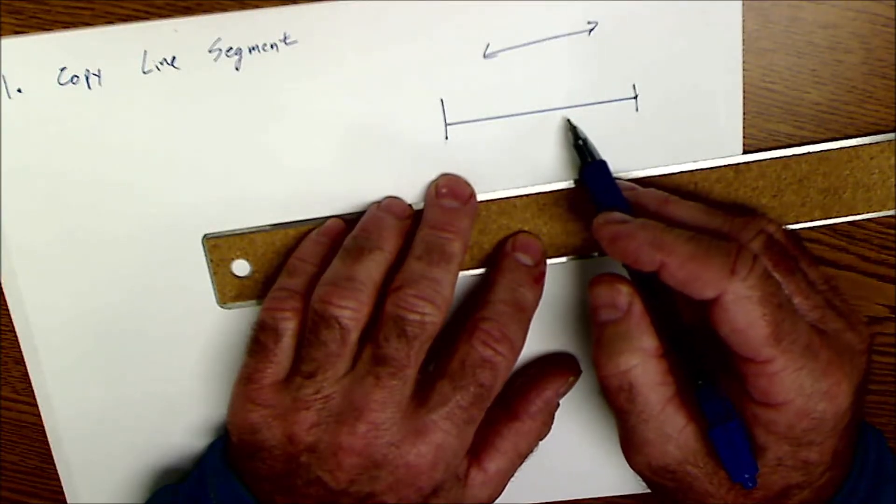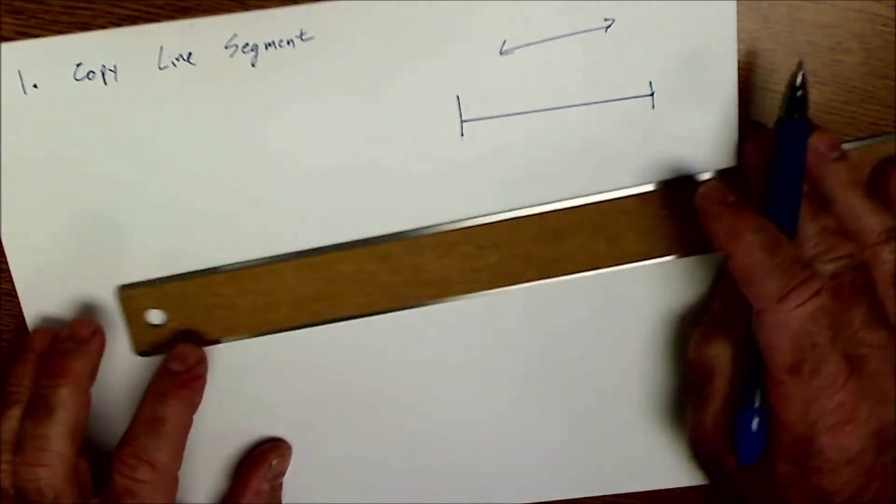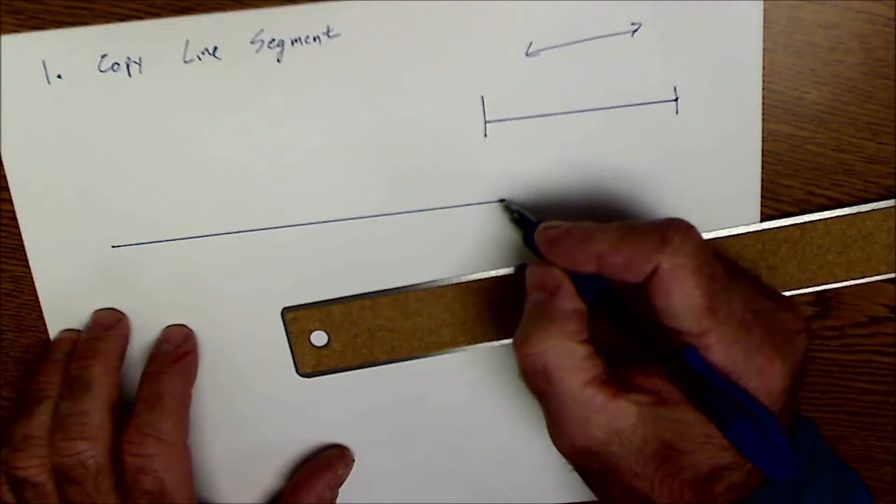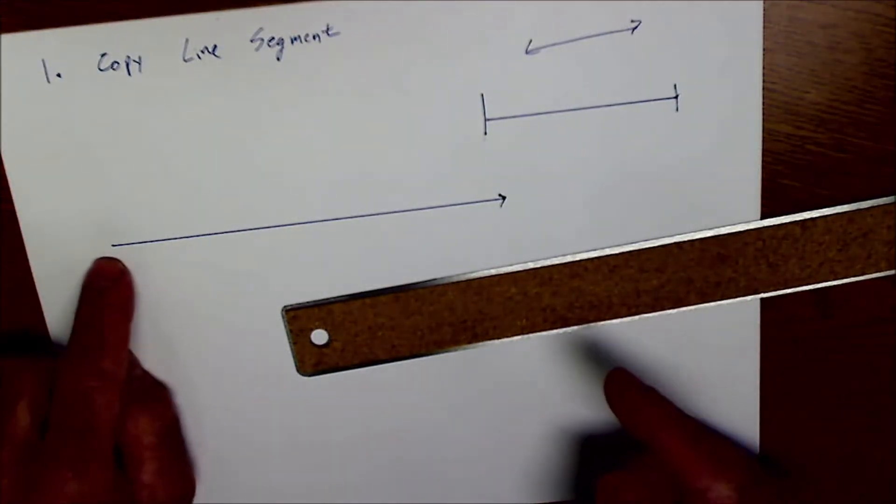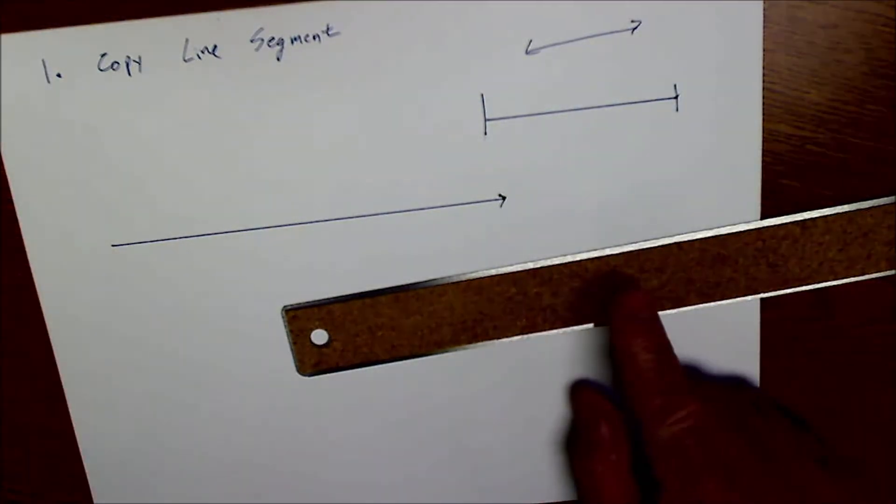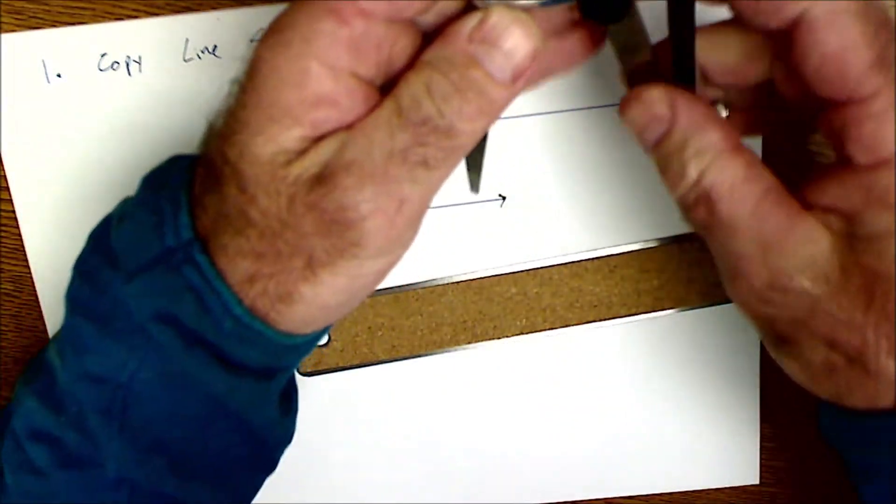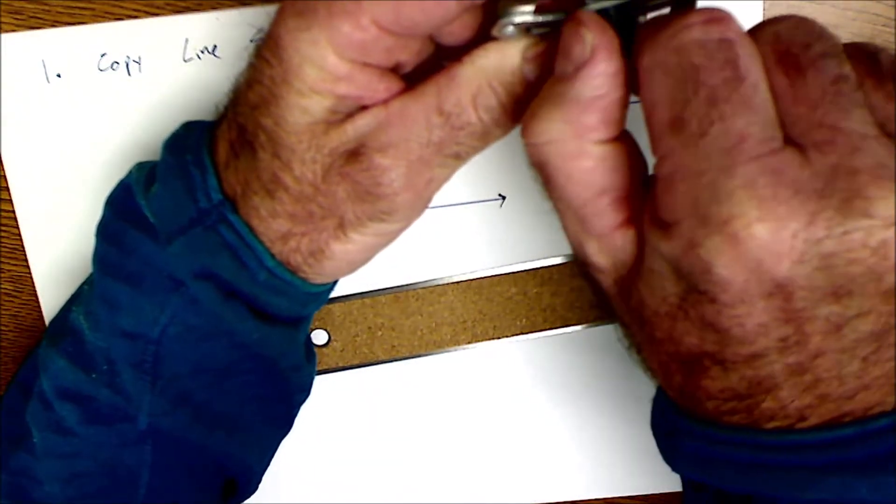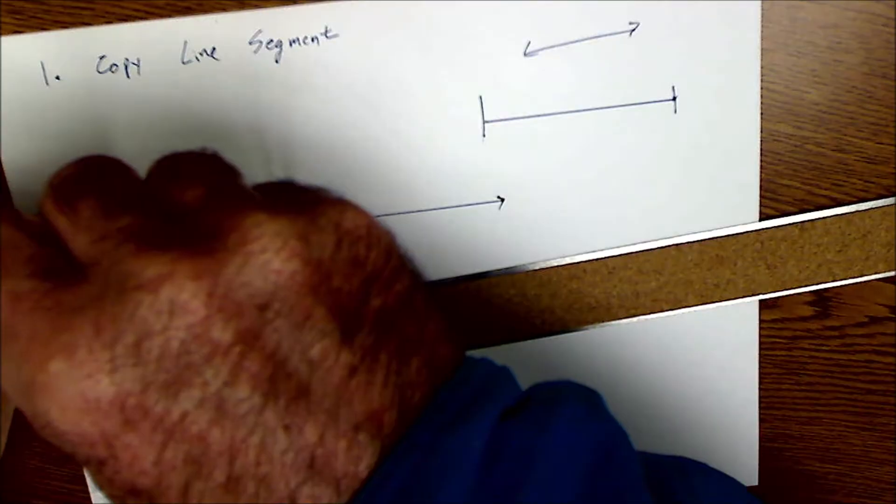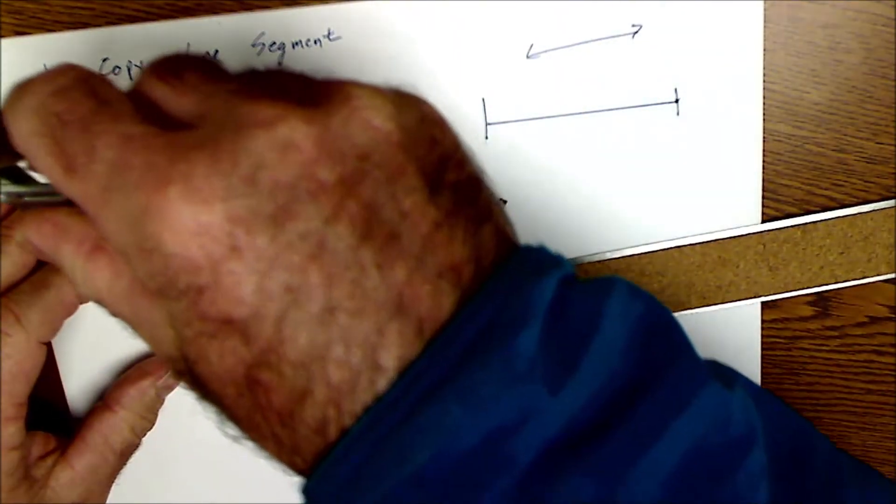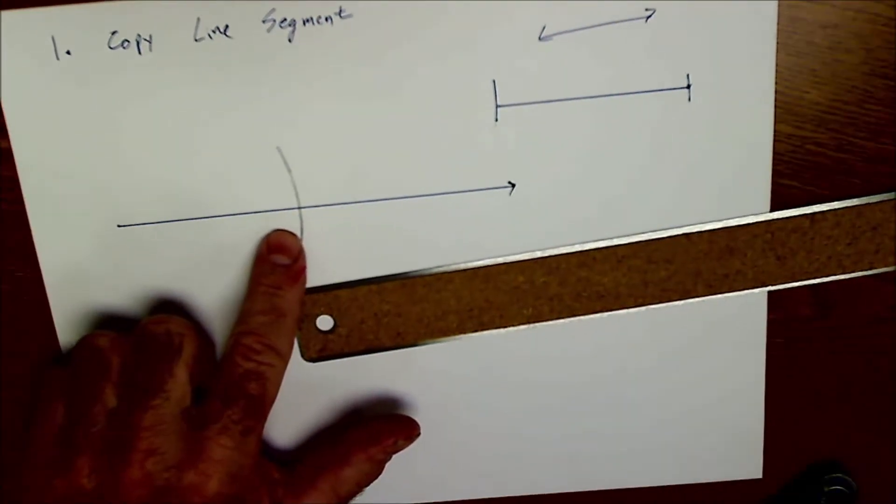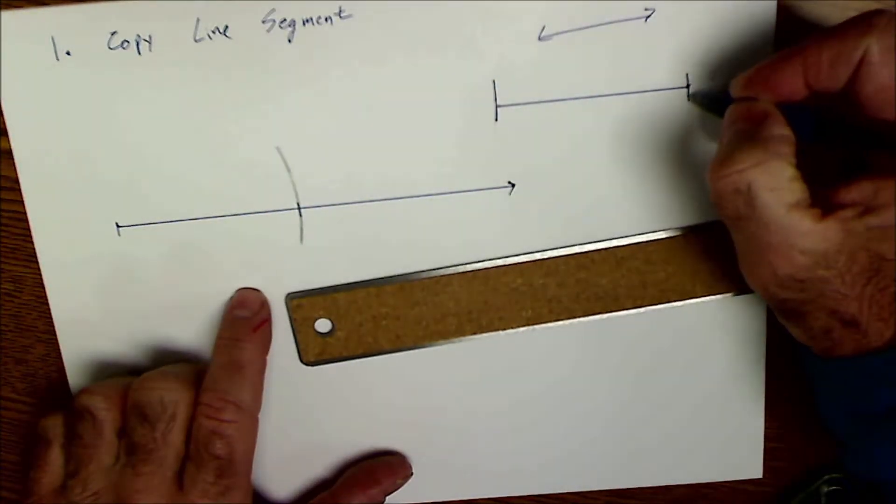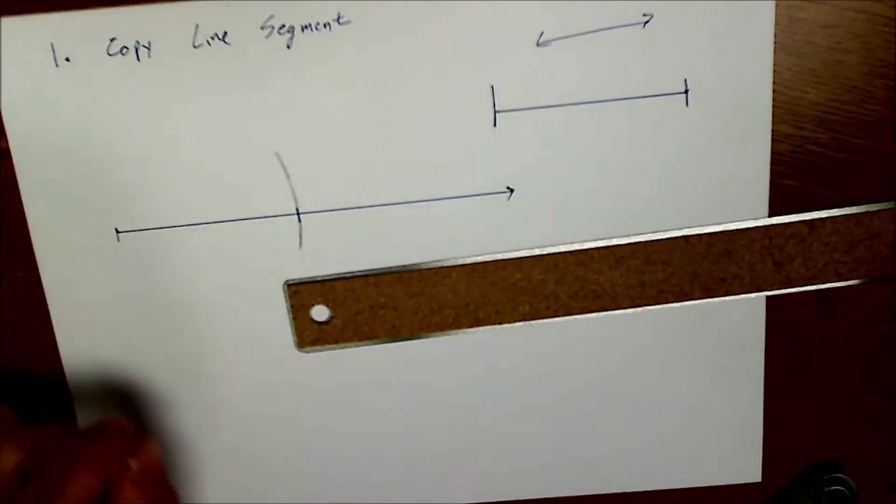If I want to copy a line segment for the exact same length, I'm just going to start by drawing a line that's infinite or a ray that has a starting point and keeps going forever. And then I'm just going to open my compass up to the existing line segment, lock it in place, scribe this arc across it, and there's a copy of a line segment. So this line segment has the same length as this line segment here. So that's our first construction.